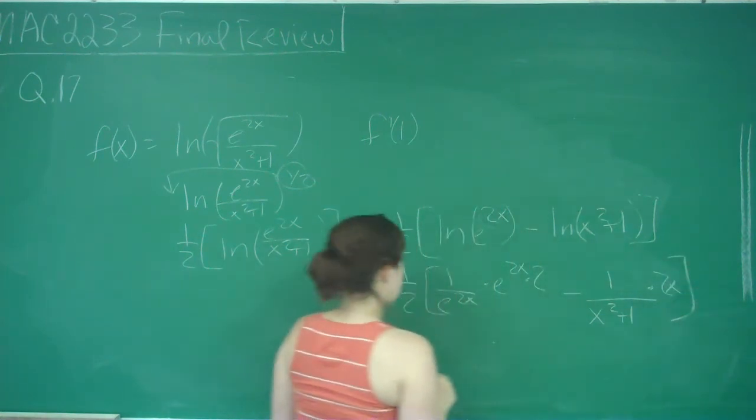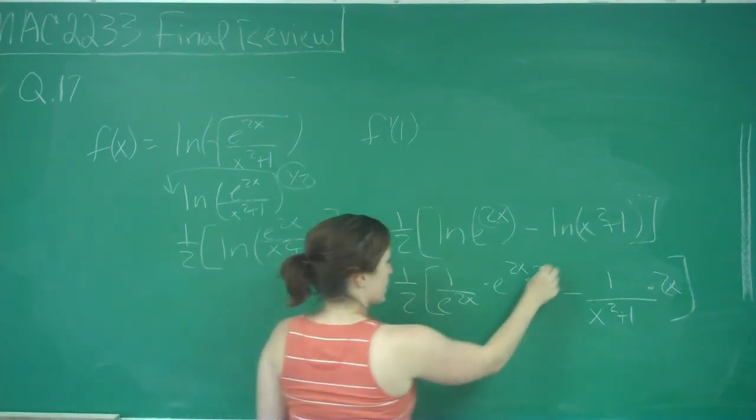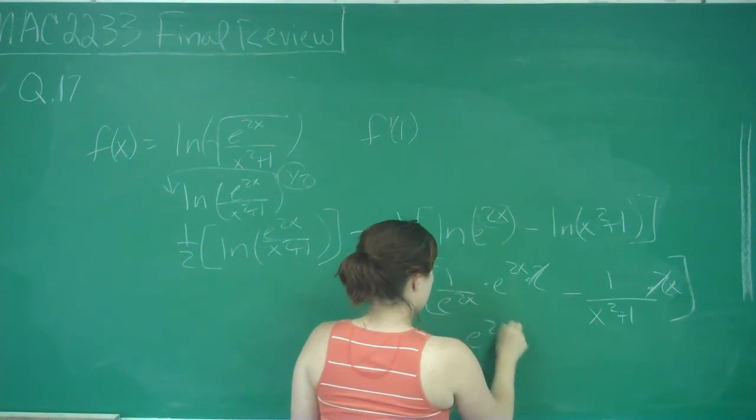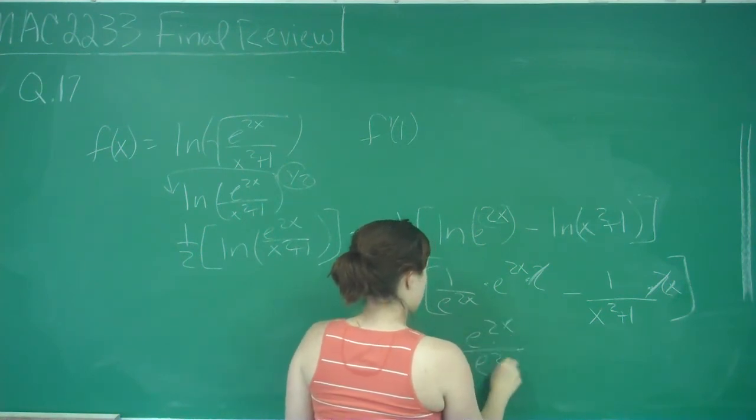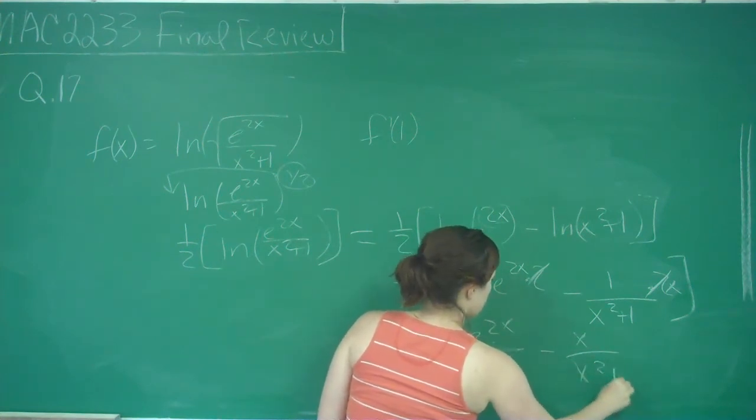So I see that I've got a 2, 2, and this 2 I can cancel out, so this gives me e to the 2x over e to the 2x minus x over x squared plus 1.